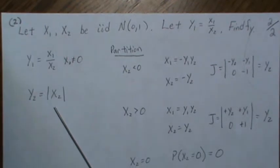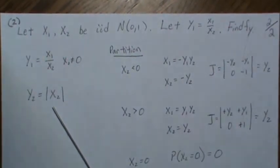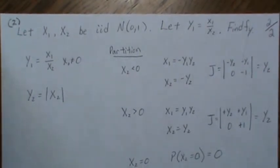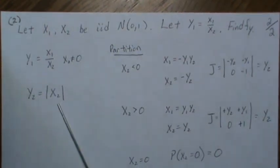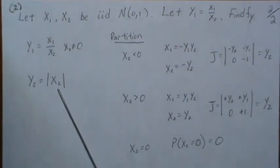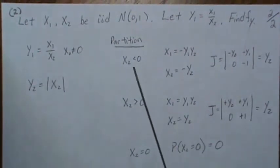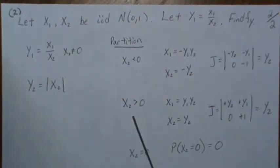The reason I do that is it creates a situation where the transformation is not one-to-one, and so we have to think about partitioning it into regions where the transformation is one-to-one.